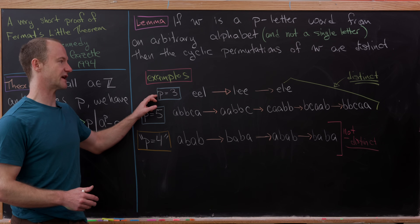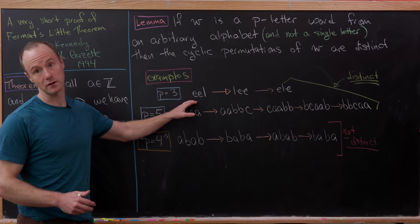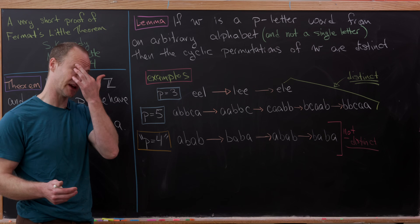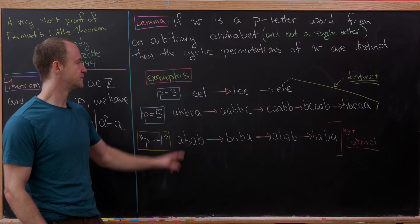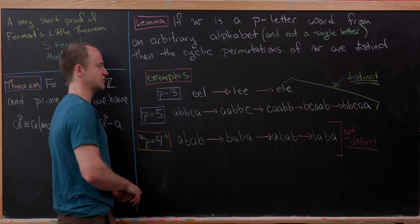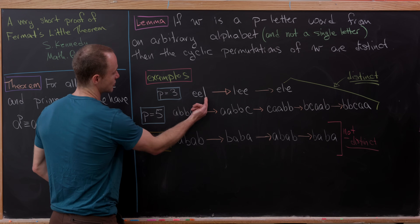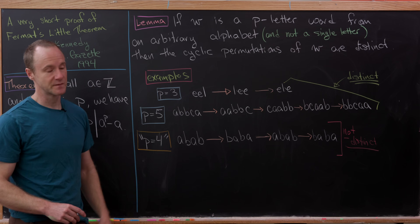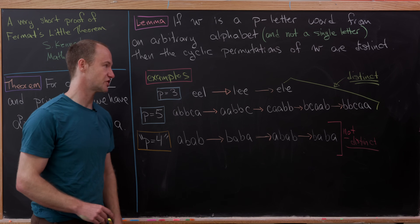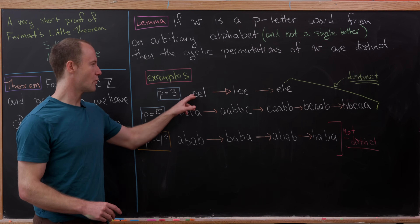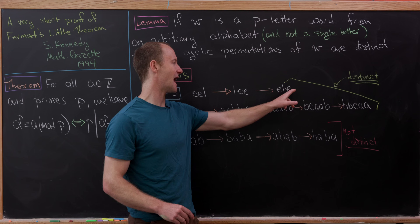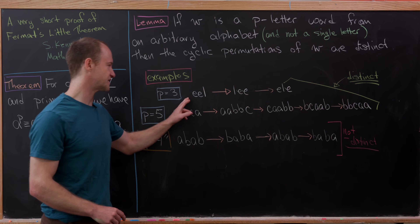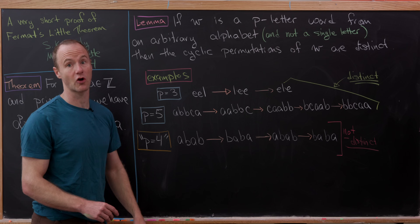Let's look at the p equals three case and take the word 'eel'. This is an actual word, though we don't need an English word — just a word from an arbitrary alphabet. If we do a first cyclic permutation, bringing l to the front, we get 'lee'. Then another cyclic permutation gives 'ele'. If we do one more, we get back to 'eel'. Notice that all three cyclic permutations are distinct.